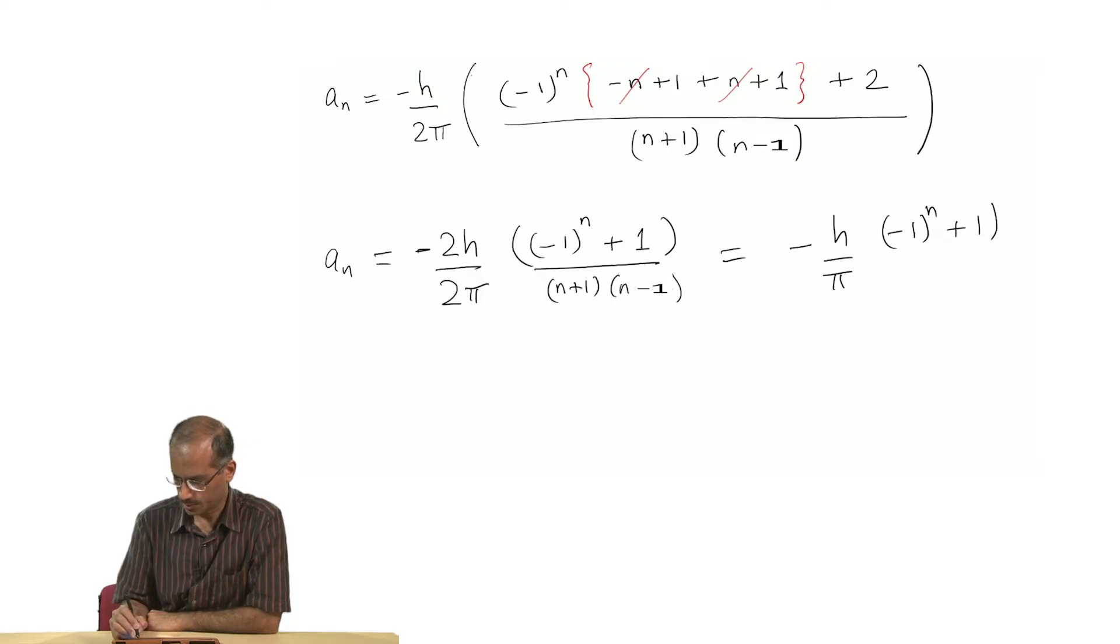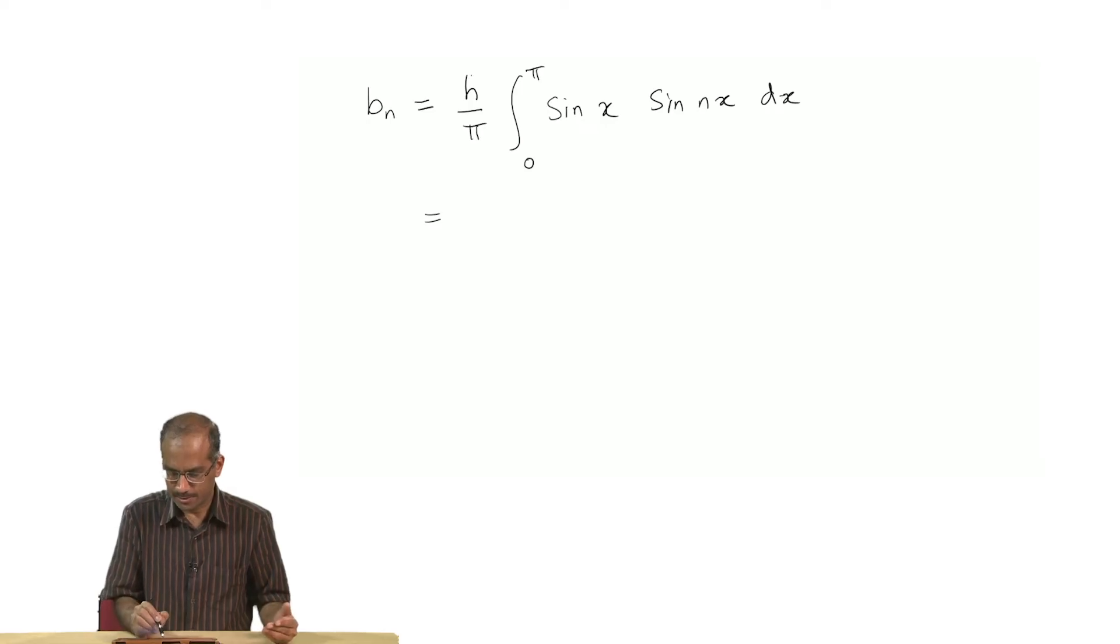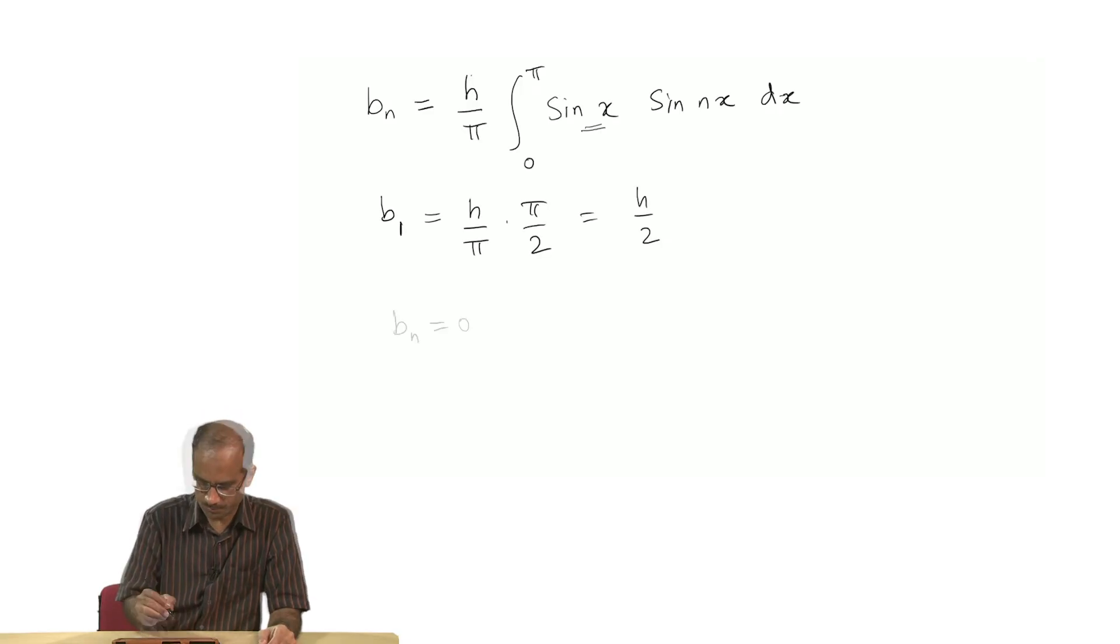I have written the integral for b_n. Again we need to do the same thing. This integral will contribute only when this n is equal to whatever number is here in front of this x. In this case it happens to be 1. The only value for which this integral will be nonzero is if n is equal to 1, and all other b_n's are equal to 0 for n greater than 1.